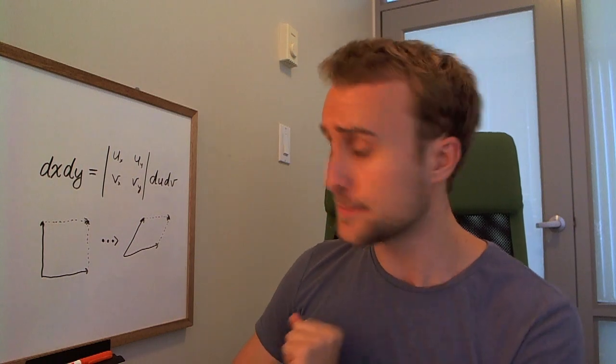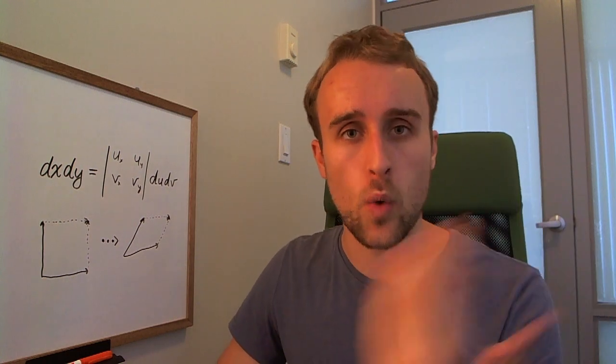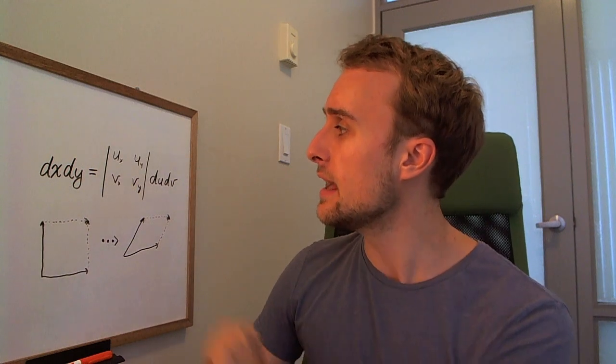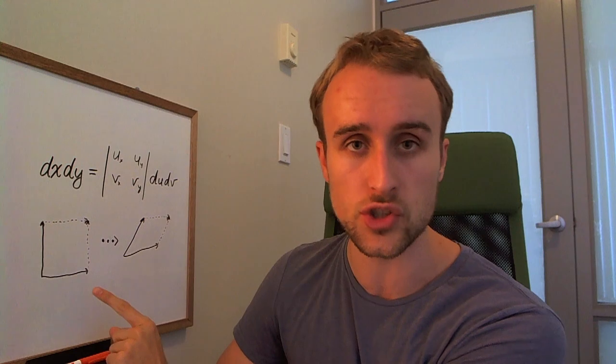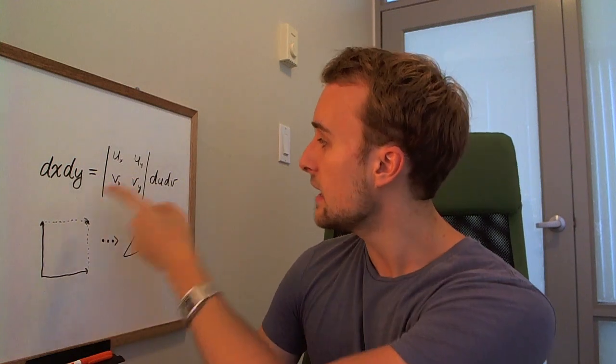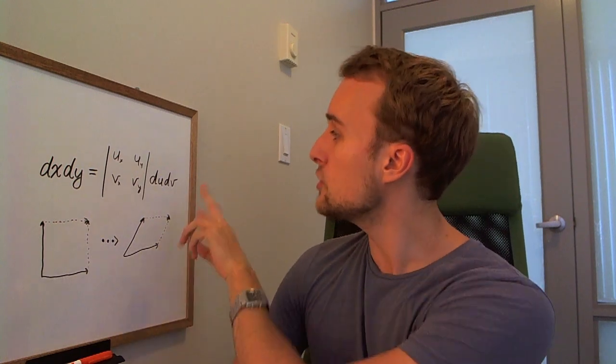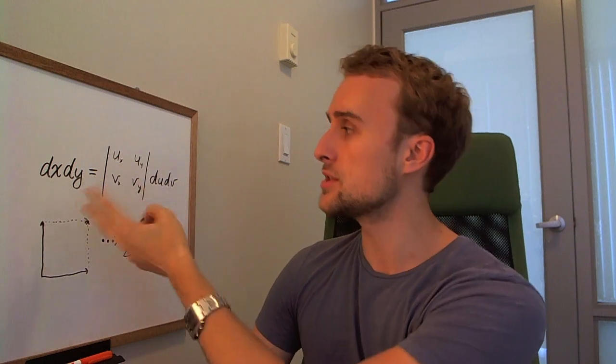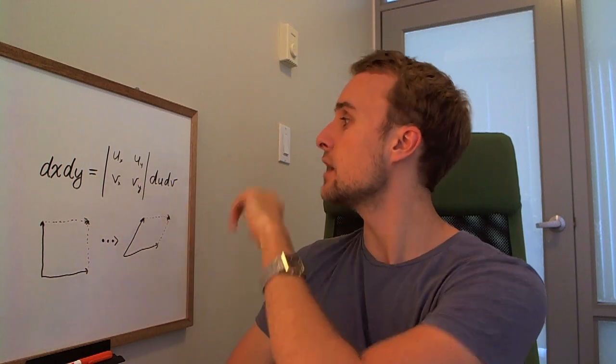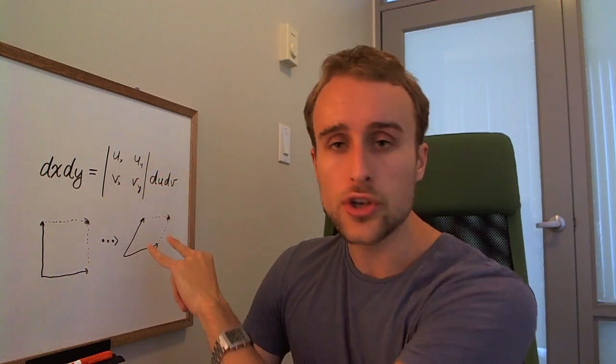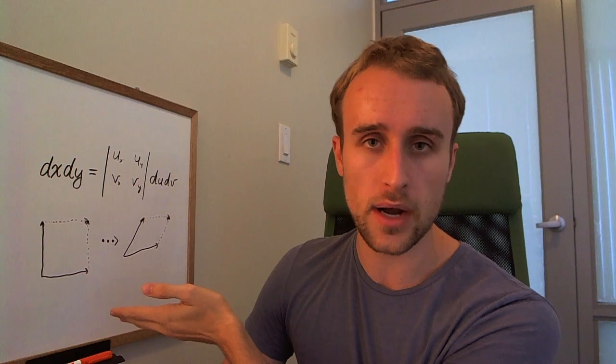And if you think about it, if you actually walk through the intuition, the intuition is that this is representing the area of a square. And this is the translated coordinates, and it's the area of a parallelogram. And because u and v are functions of x and y, or x and y are functions of u and v, you can use the determinant to figure out the area of this parallelogram.